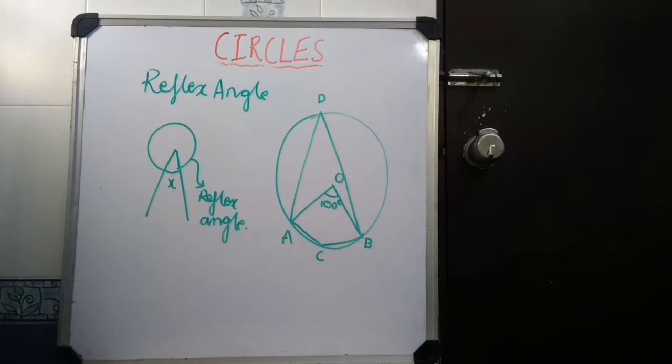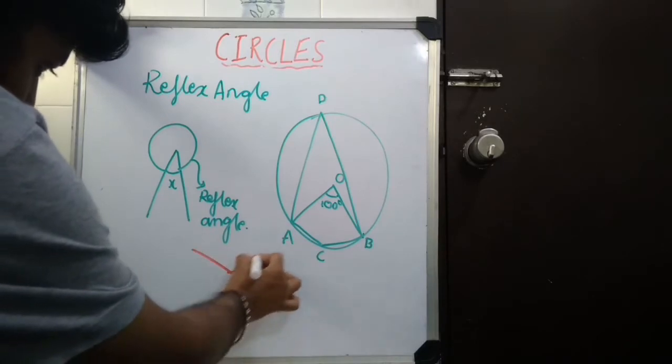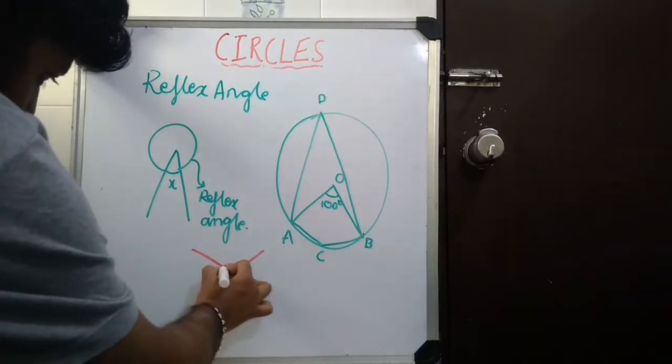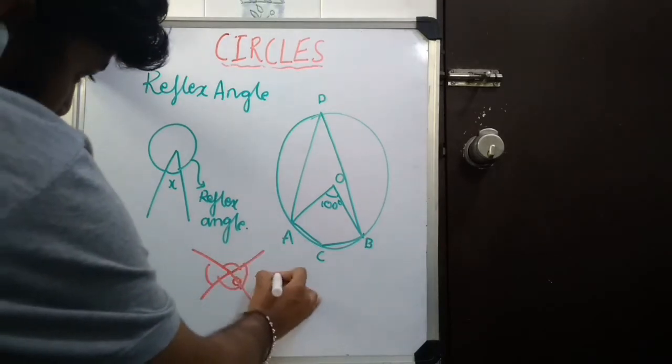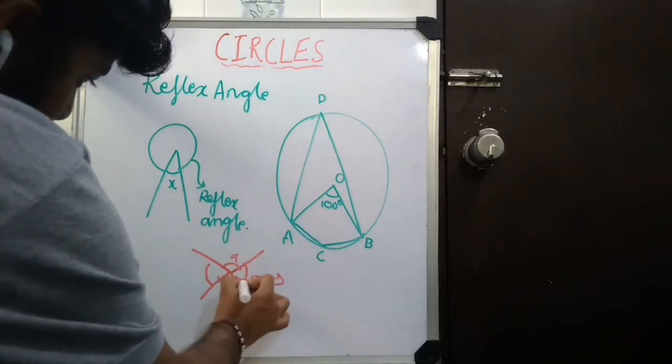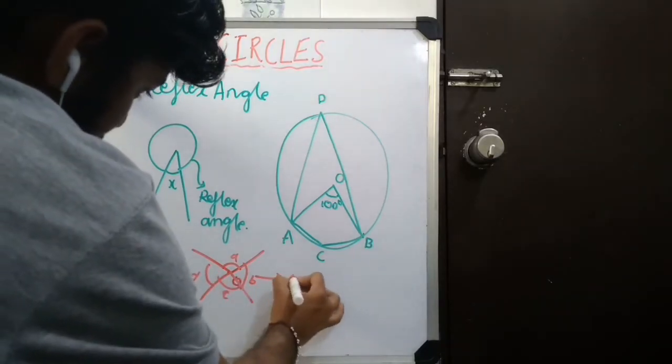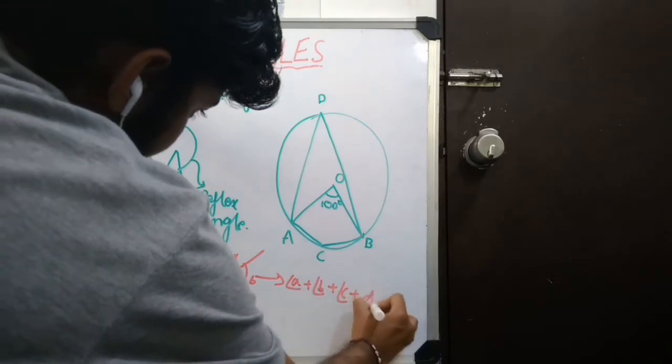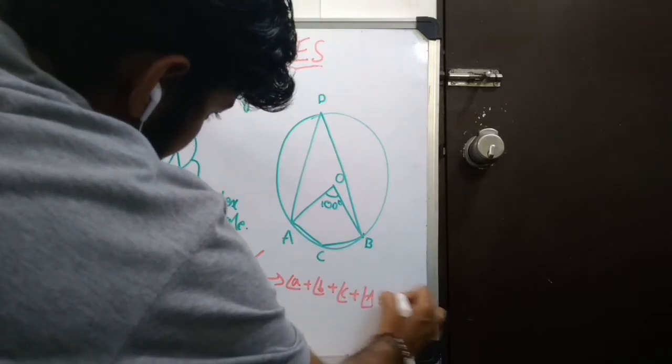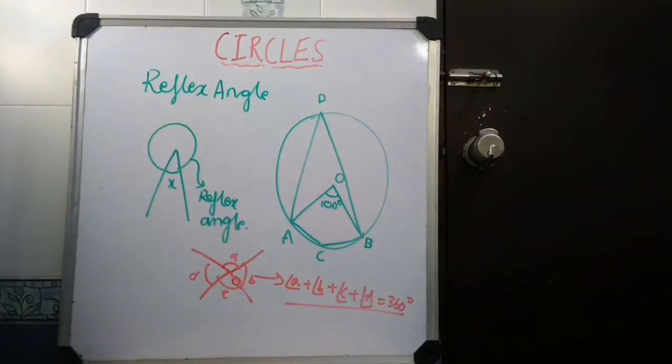Now, before going into the reflex angle, I want you all to know one thing. If I have a point O and if I have angles around this point, and if I add all of their values, let me call this as ABCD, angle A plus angle B plus angle C plus angle D will be equal to 360 degrees. Remember that. The sum of angles about a point is 360 degrees.